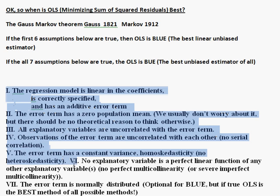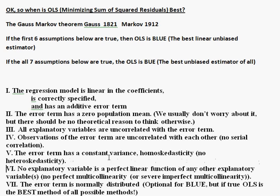If only the first six assumptions are true, then there could potentially be a better way — with a smaller variance, a slightly more accurate way — to estimate the slopes. But OLS is still probably pretty good. In fact, it's quite common in econometrics papers and other regression papers to not even discuss whether the residual term is normally distributed. People's general opinion is usually that if the first six assumptions are true, that's good enough, and a lot of people hold that view.